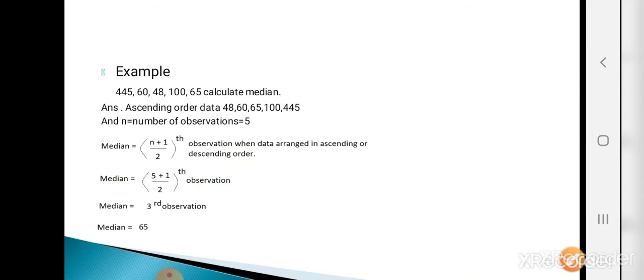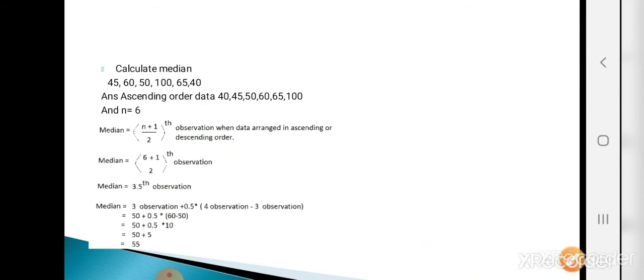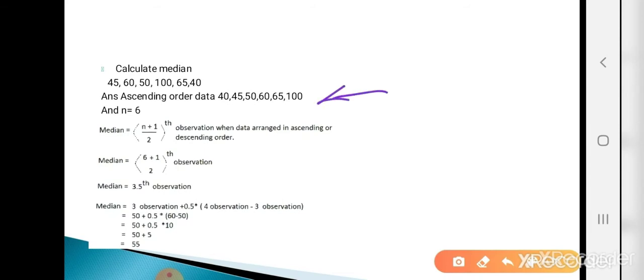Now see the second example: calculate the median for data 45, 60, 50, 100, 65, and 40. For calculating the median we arrange the data in ascending order: 40, 45, 50, 60, 65, and 100. Here n = 6.